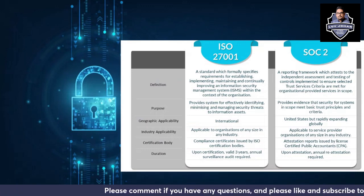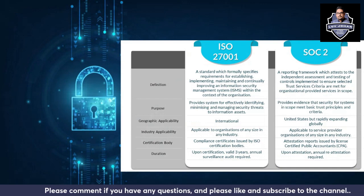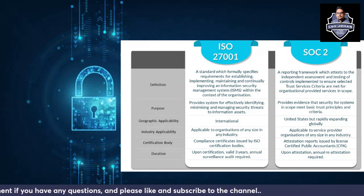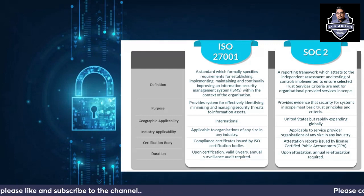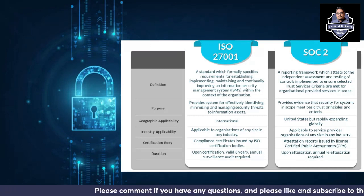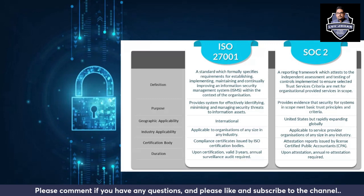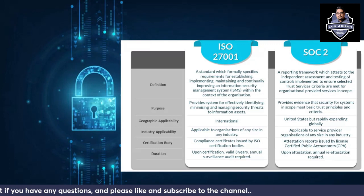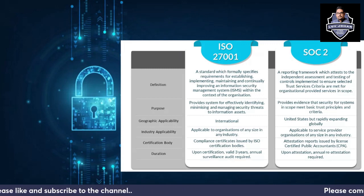ISO 27001 is a standard that formally specifies requirements for establishing, implementing, maintaining, and continually improving an Information Security Management System within the context of the organization. SOC 2 is a reporting framework that attests to the independent assessment and testing of controls implemented to ensure selected Trust Services Criteria are met for organizational provided services in scope.